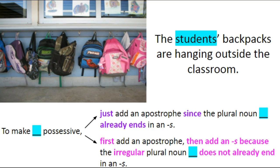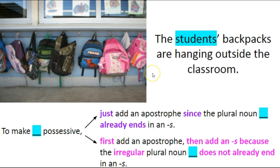The students' backpacks are hanging outside the classroom. To make 'students' possessive, just add an apostrophe since the plural noun 'students' already ends in an s. Students — plural noun — ends in an s, so just put the apostrophe there to show that these backpacks belong to multiple students, not just one student.